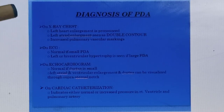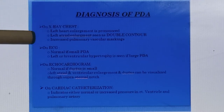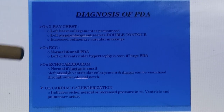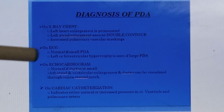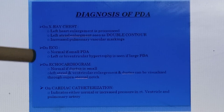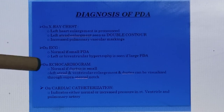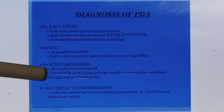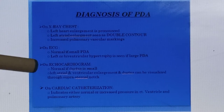For diagnosis: on chest X-ray, left-sided enlargement is pronounced and there is left atrial enlargement seen as a double contour or double density sign. There are increased pulmonary vascular markings because of pulmonary hypertension. ECG shows normal results with small PDA, but with large PDA there is biventricular hypertrophy. On echocardiogram it is normal if the ductus is small, but if large, biventricular enlargement and the ductus itself can be visualized through the suprasternal notch. Cardiac catheterization indicates normal or increased pressure in the right ventricle and pulmonary artery due to pulmonary hypertension.